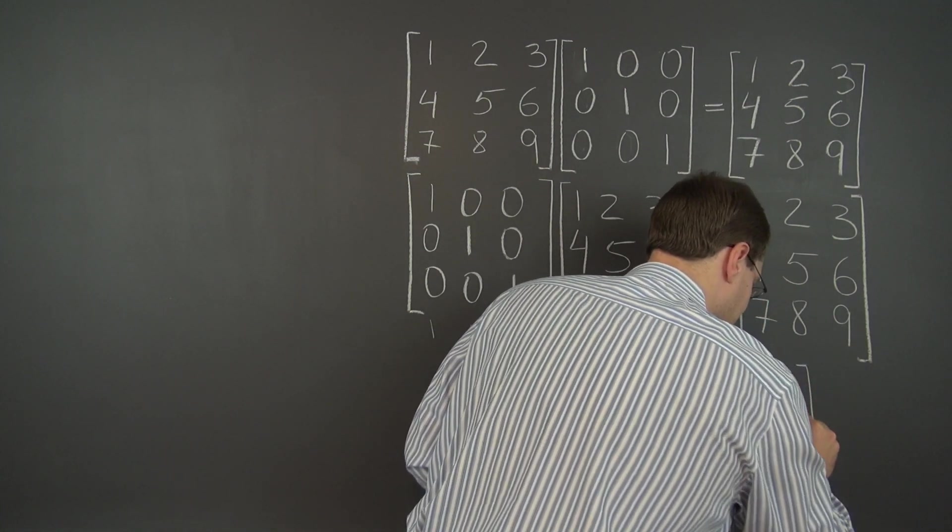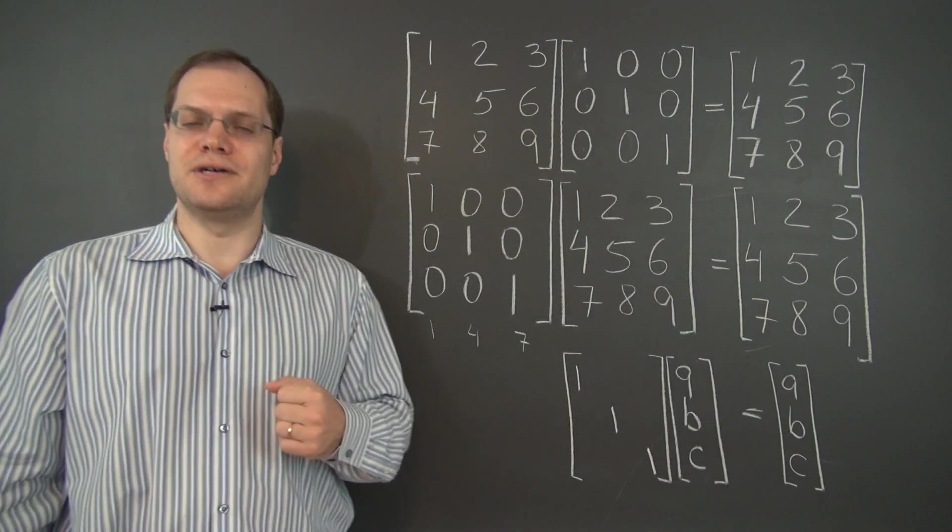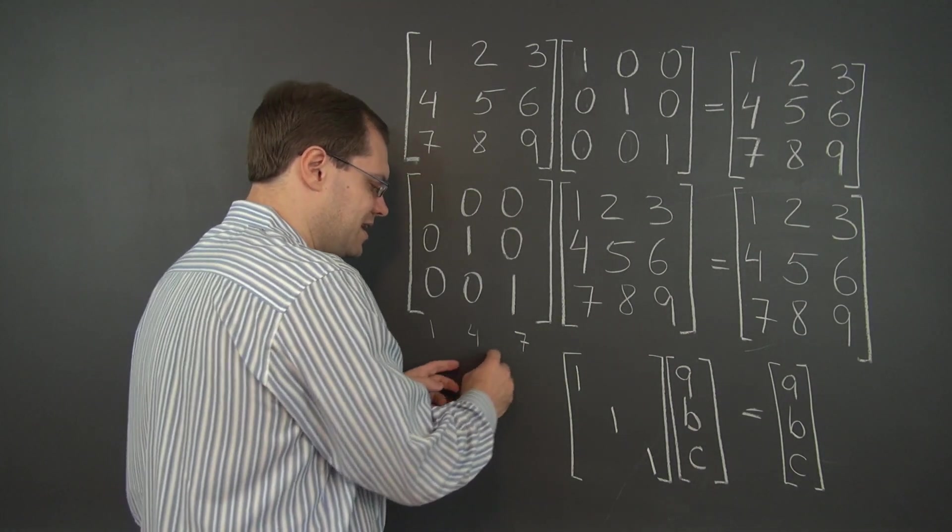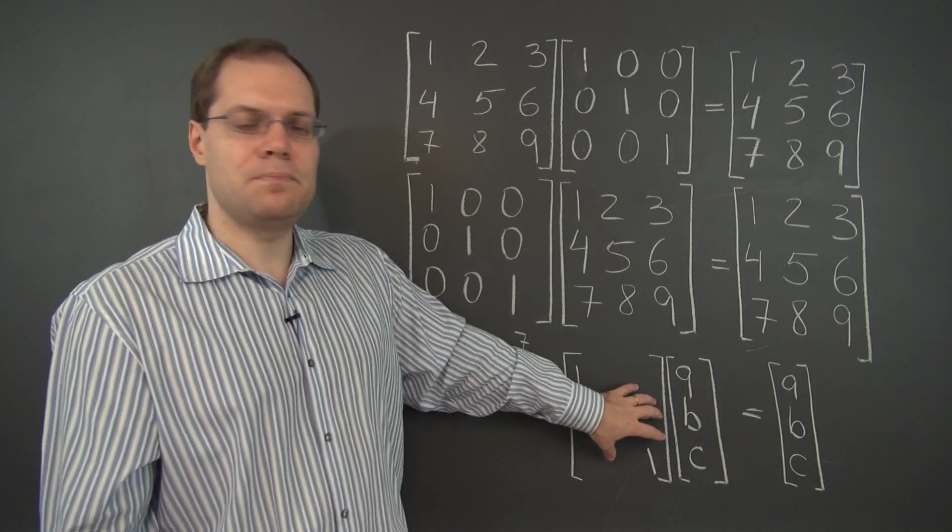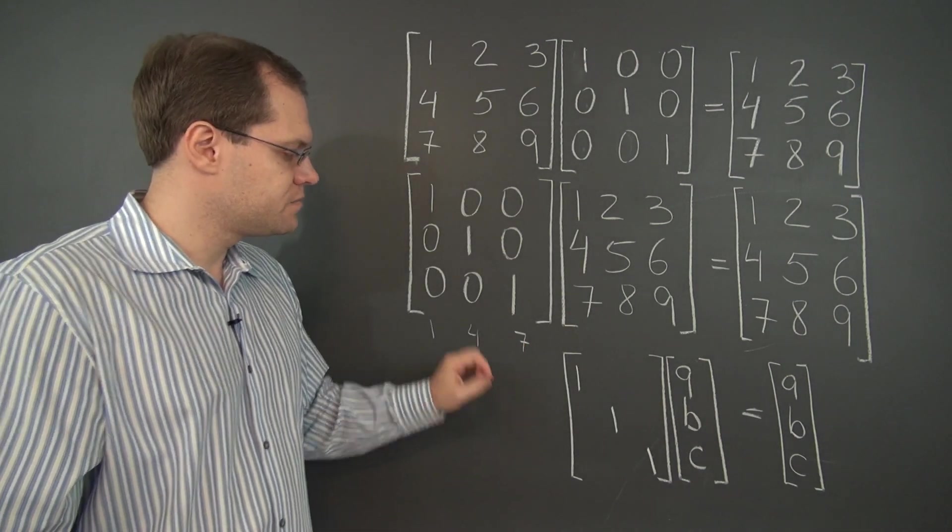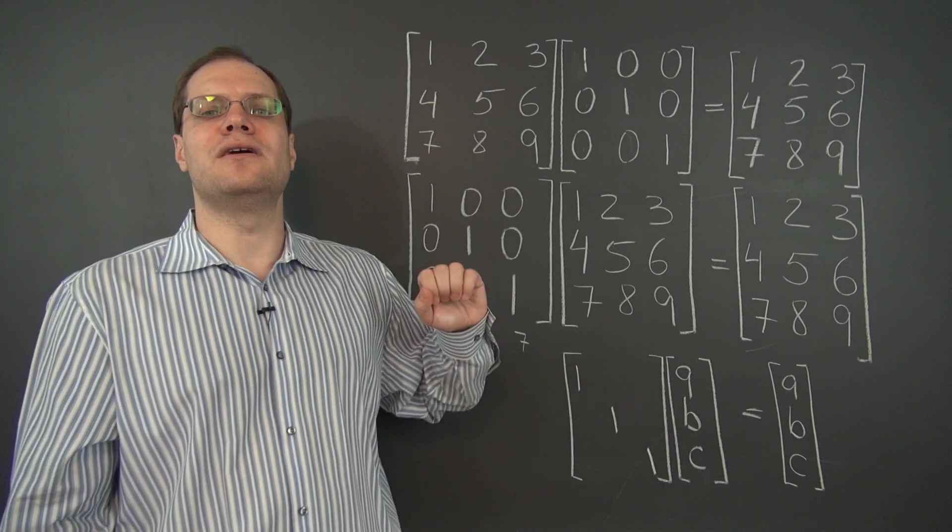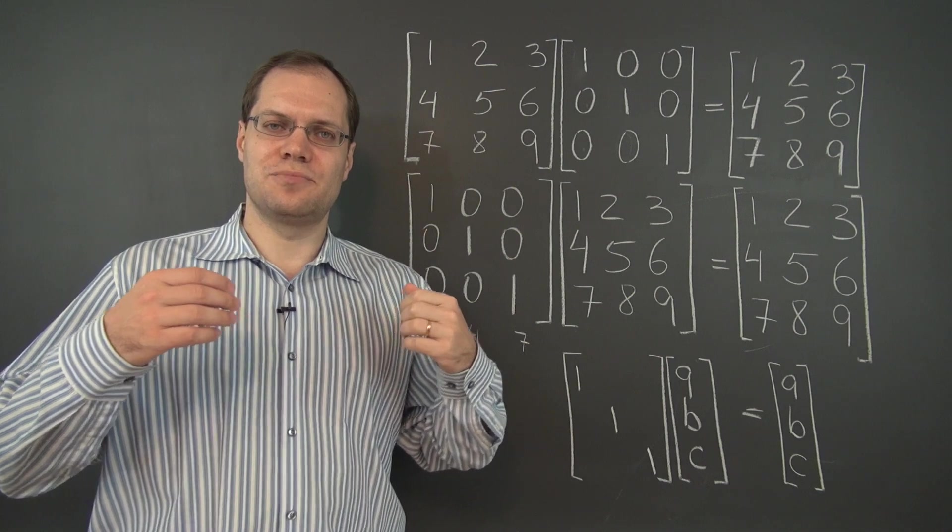This will be very important in the next video when we're talking about solving linear equations using matrix algebra. And of course, it would have left any 1 by 3 matrix unchanged as well if it appeared on its right. So there you go. This is the identity matrix, and we have only one step remaining in making matrix algebra complete.